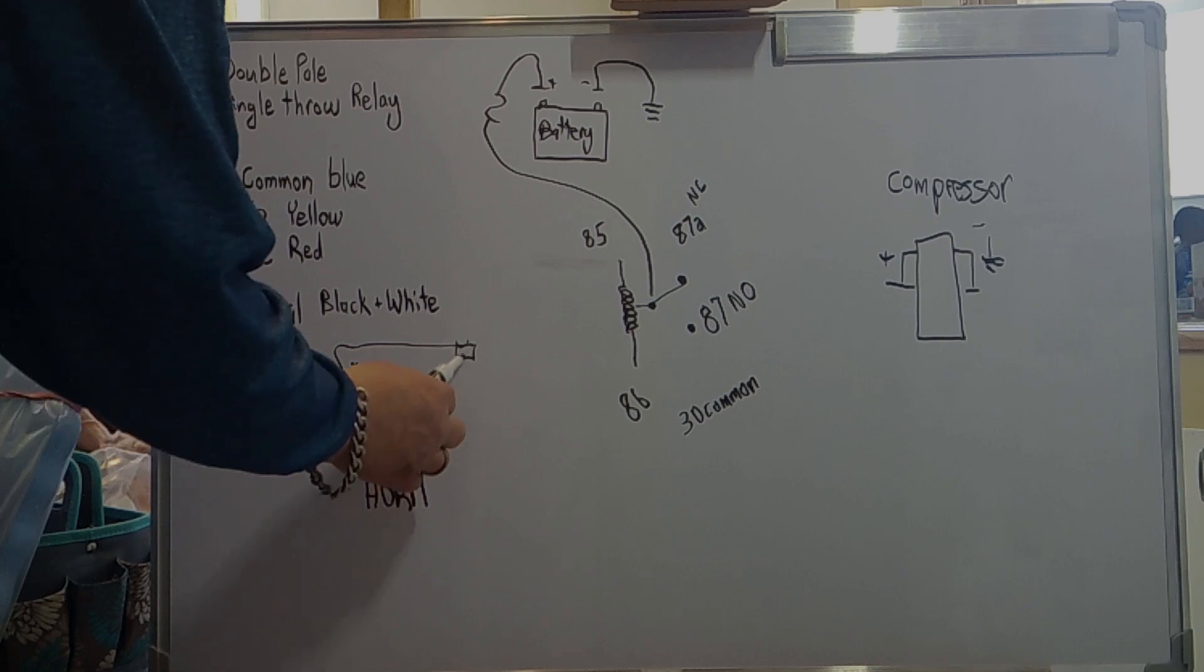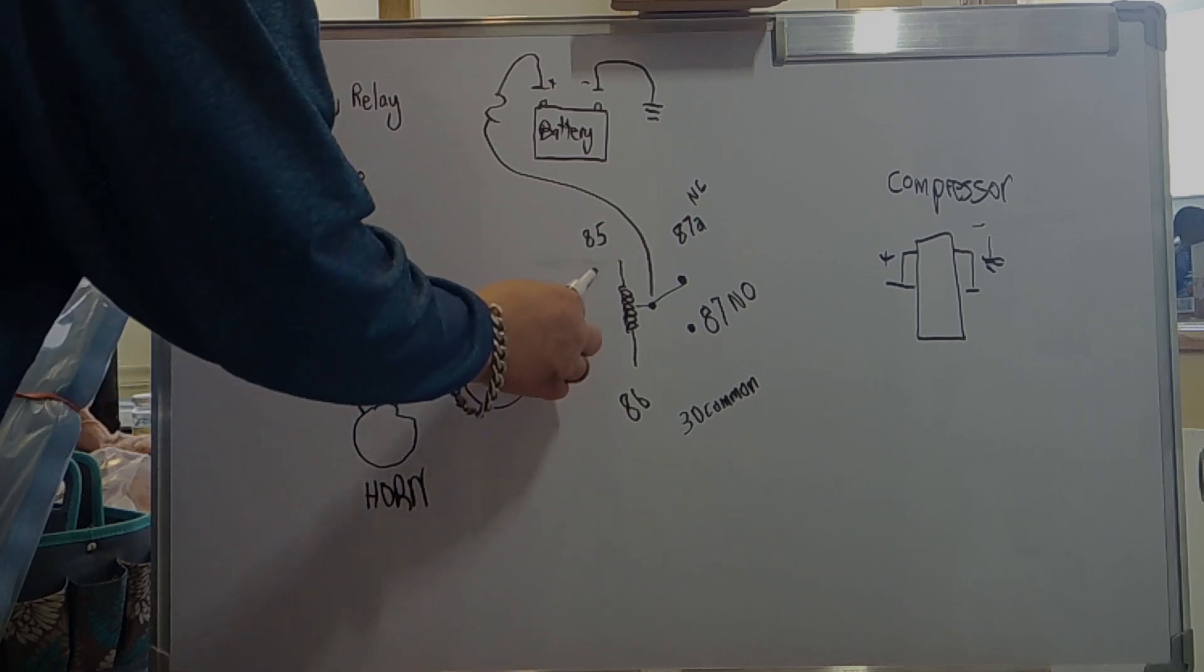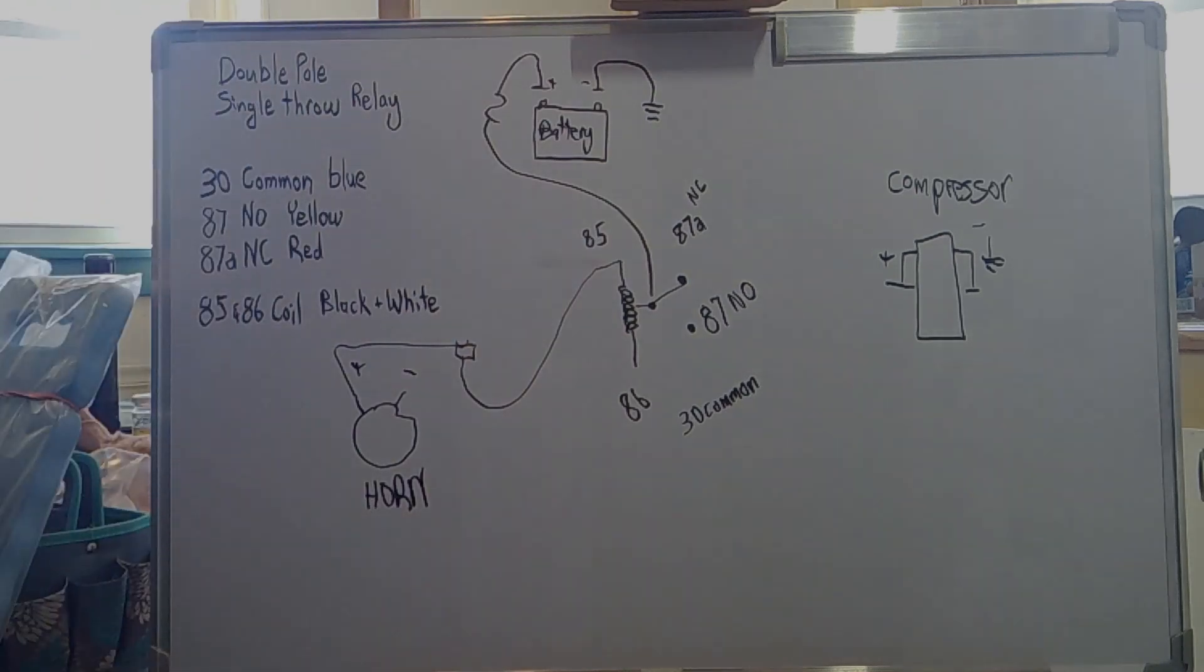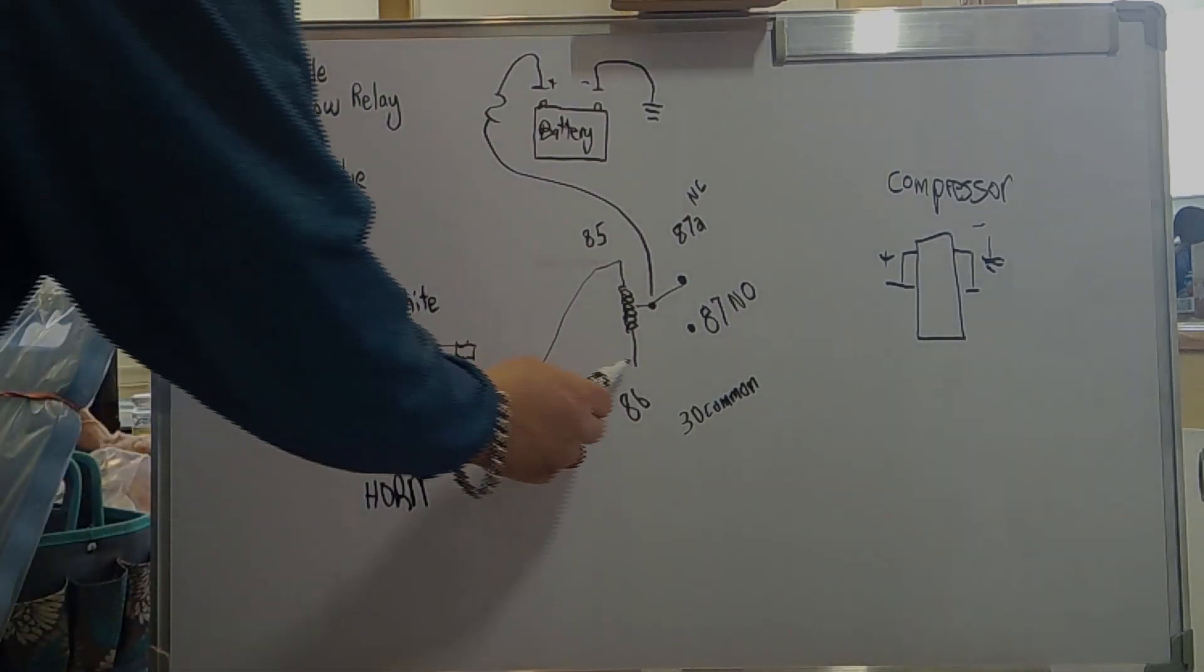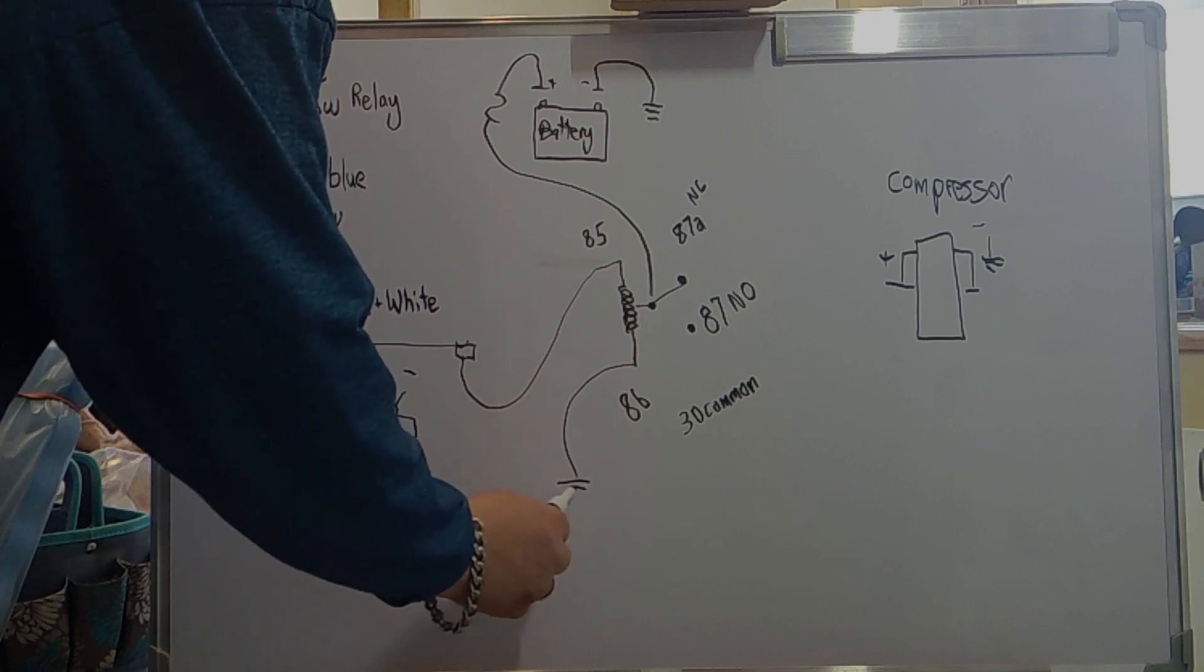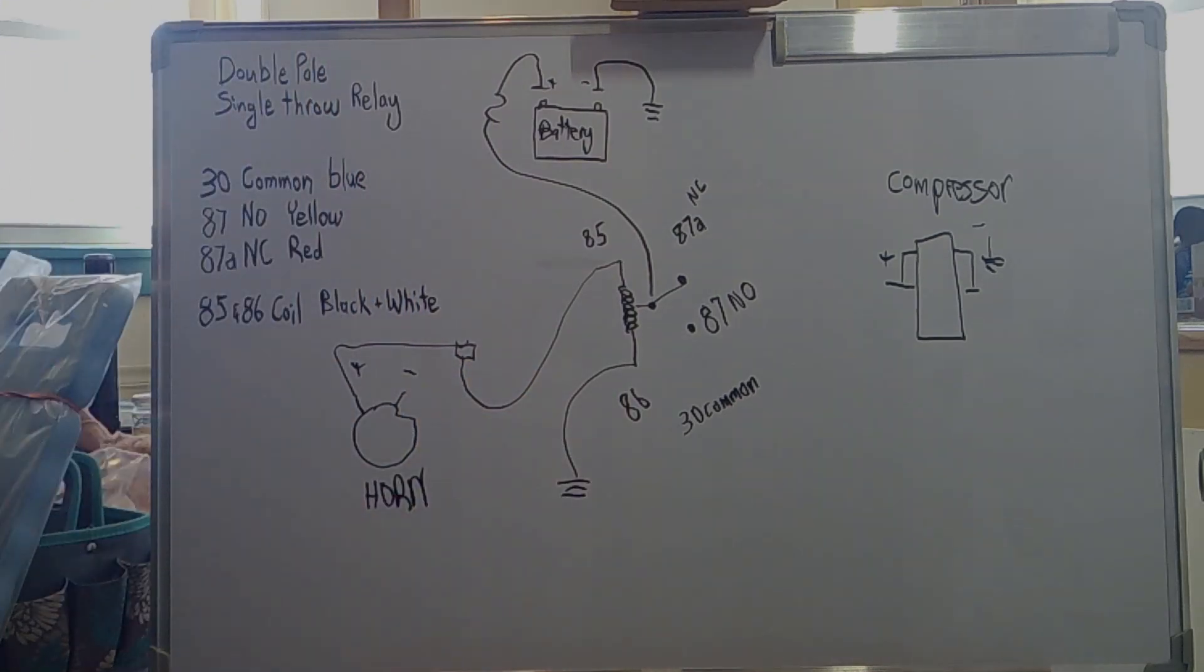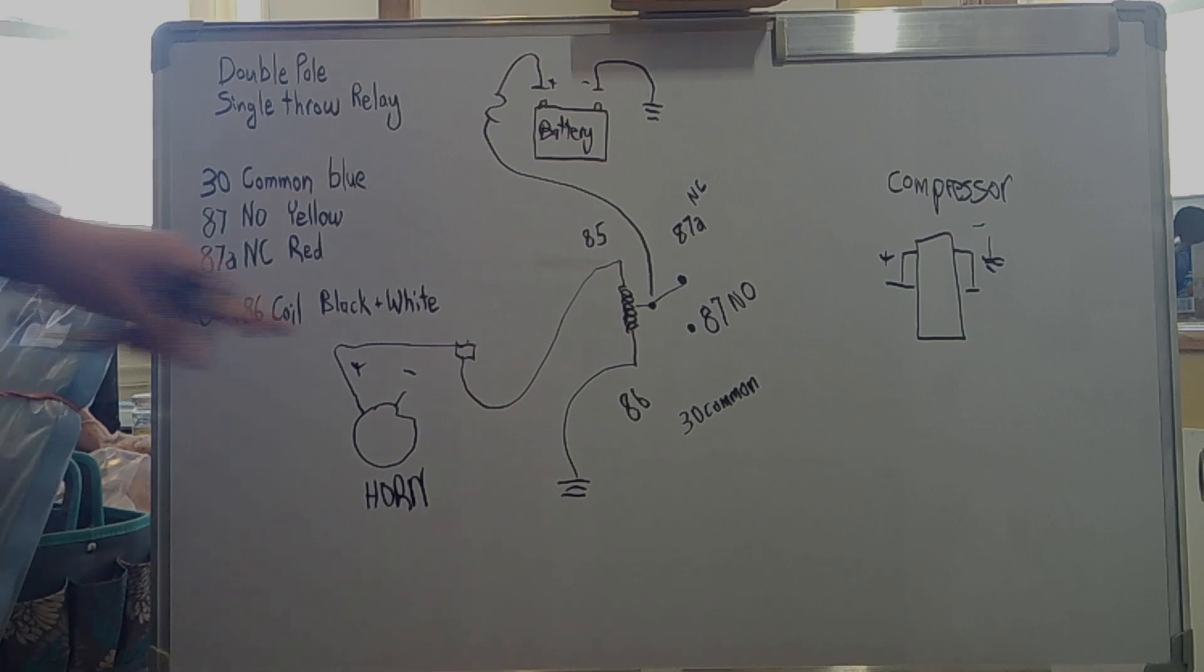And I ran from that tap to my 85 pin, which was my black wire on my coil. Then I ran my other wire, my white, to ground, to body ground on the car. Now when I hit the horn, it energizes this side of the coil.